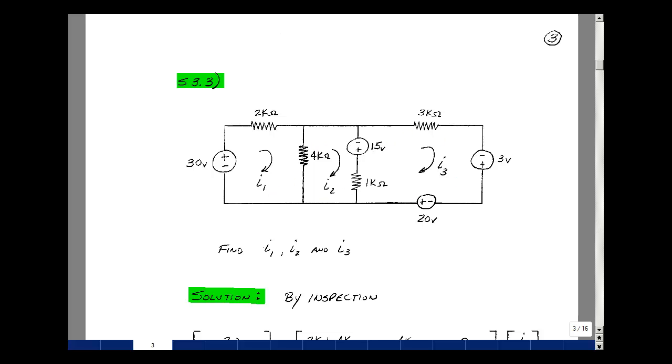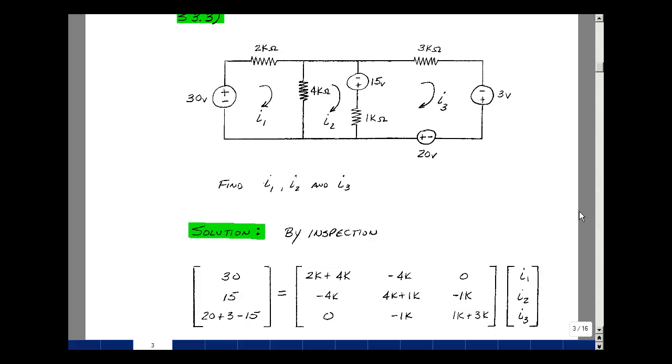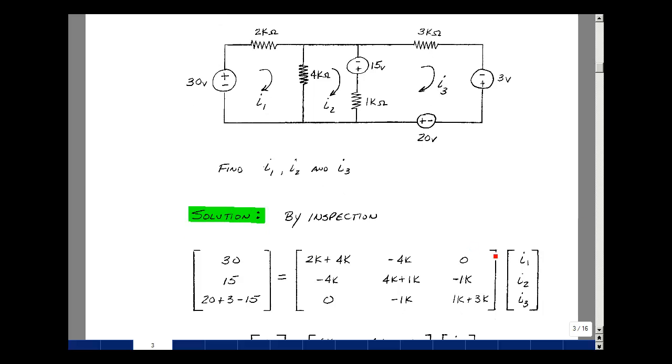In the Chapter 3 notes, we had an inspection algorithm if we pick our currents in a clockwise direction, so let's use that algorithm. With three meshes, we'll have a 3x3 matrix. Column 1 is associated with I1, column 2 with I2, and column 3 with I3. On the left-hand side of the equation, we'll form a vector which has three rows and one column, and we'll be putting our sources in there.